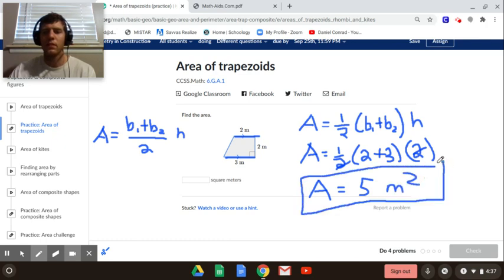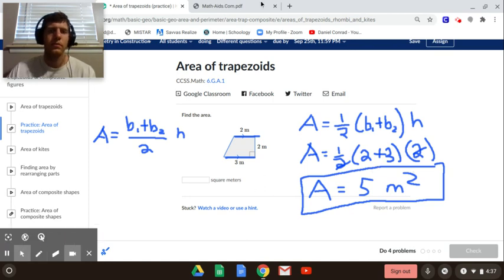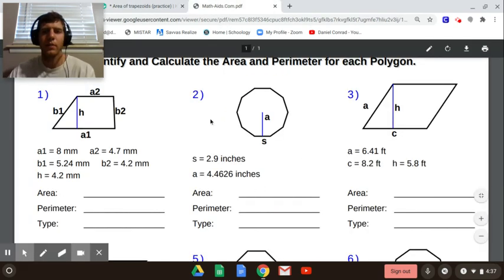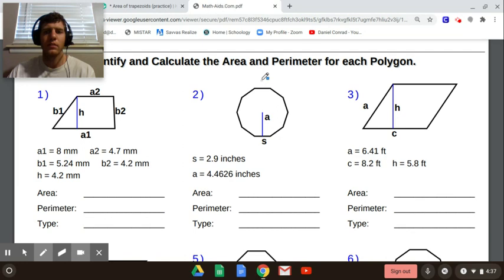That's the area formula for a trapezoid. Now the last one we have is the area for a regular polygon. If we look at number 2 on the worksheet that we've assigned, if we count the number of sides here, we have 1, 2, 3, 4, 5, 6, 7, 8, 9, 10.